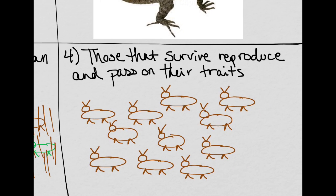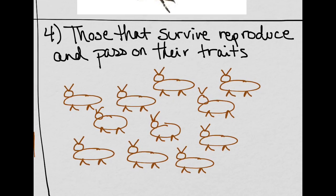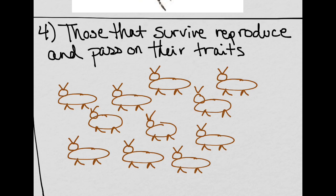And then that last step says that those that survive will reproduce and pass on their traits that happen to be successful. So the brown survive, they reproduce, and at the end, we get a new generation that has more brown than green grasshoppers.